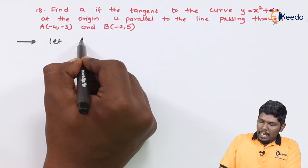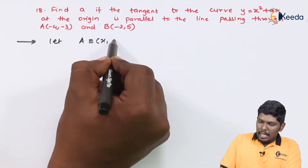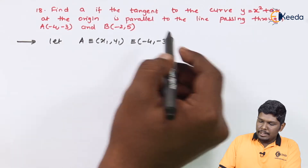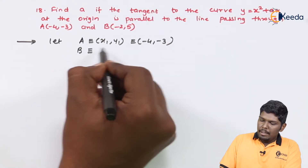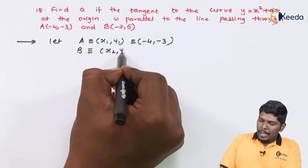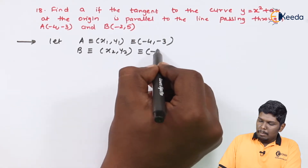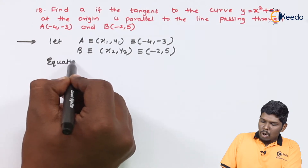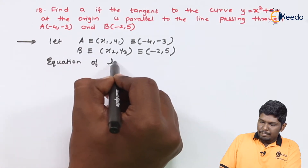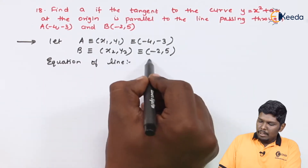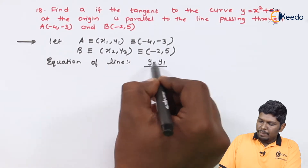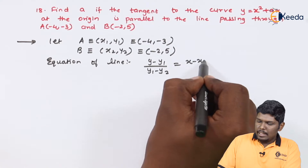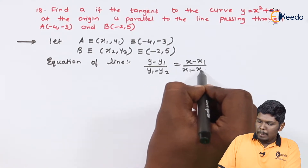Let A = (x1, y1) = (-4, -3) and B = (x2, y2) = (-2, 5). The equation of the line using two-point form is: (y - y1) / (y1 - y2) = (x - x1) / (x1 - x2).